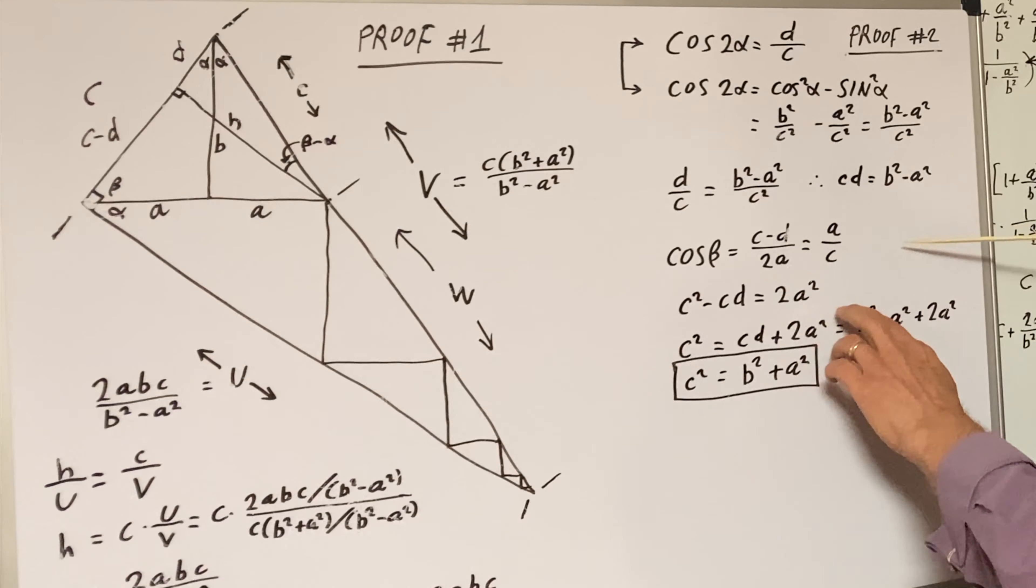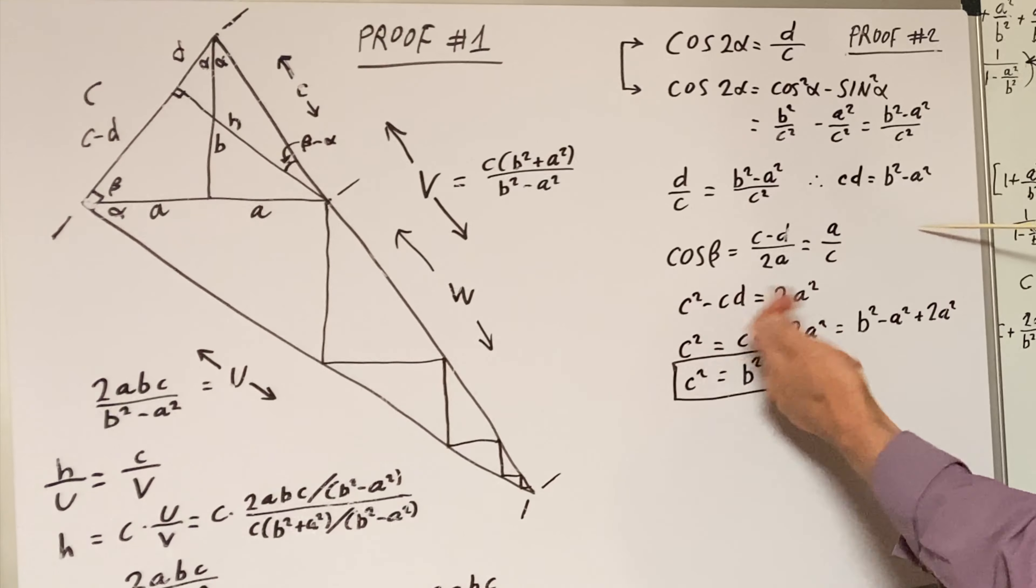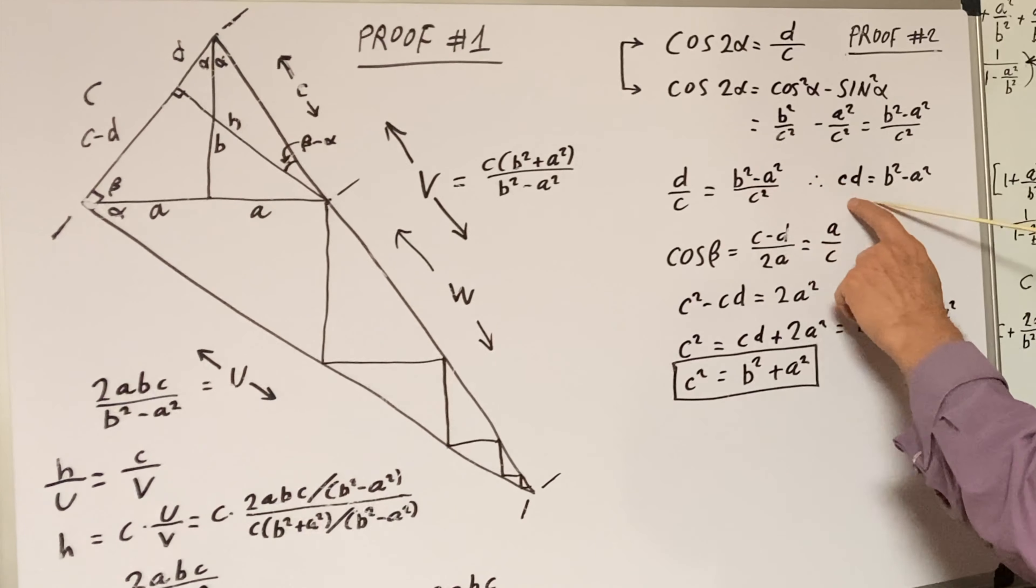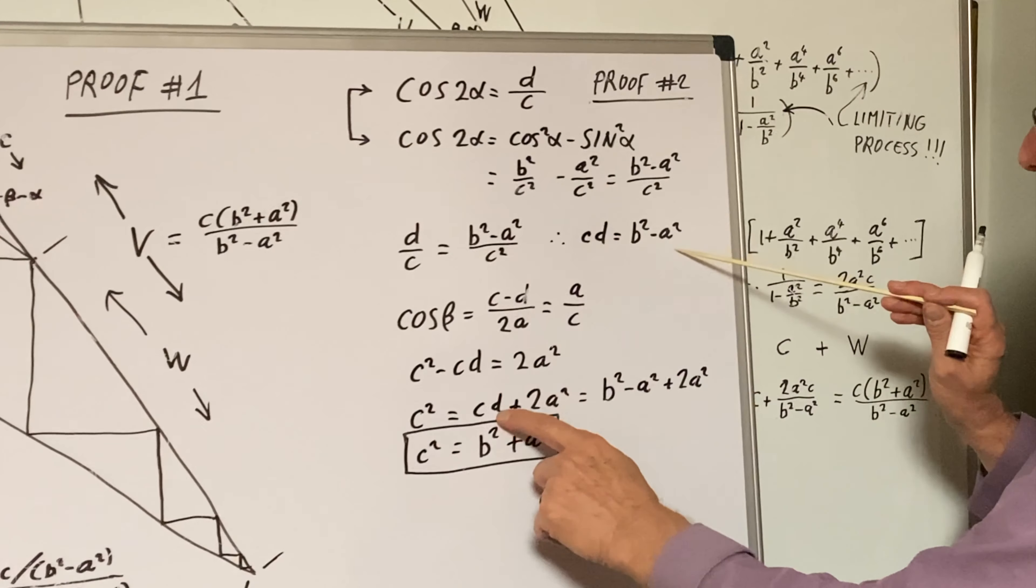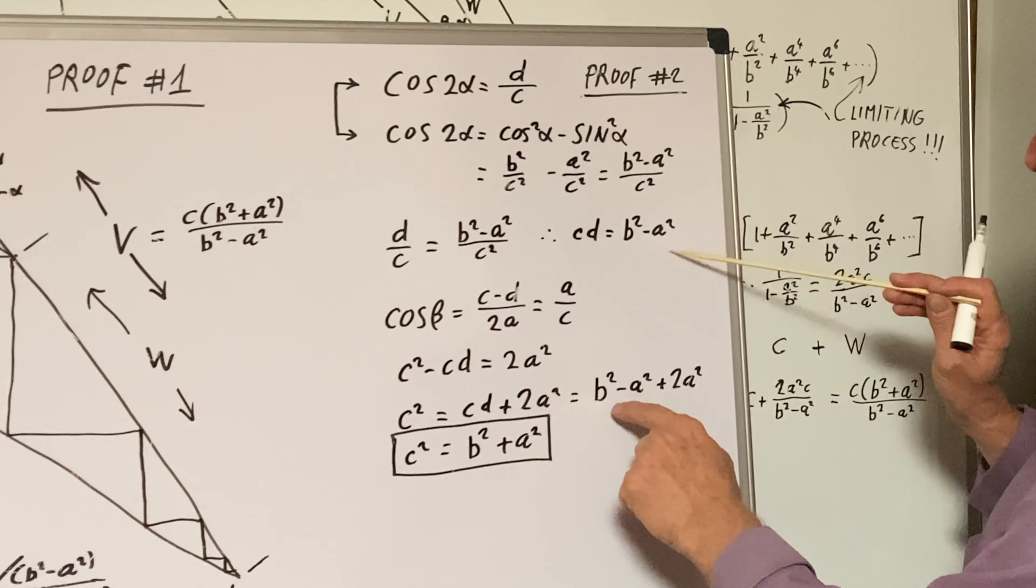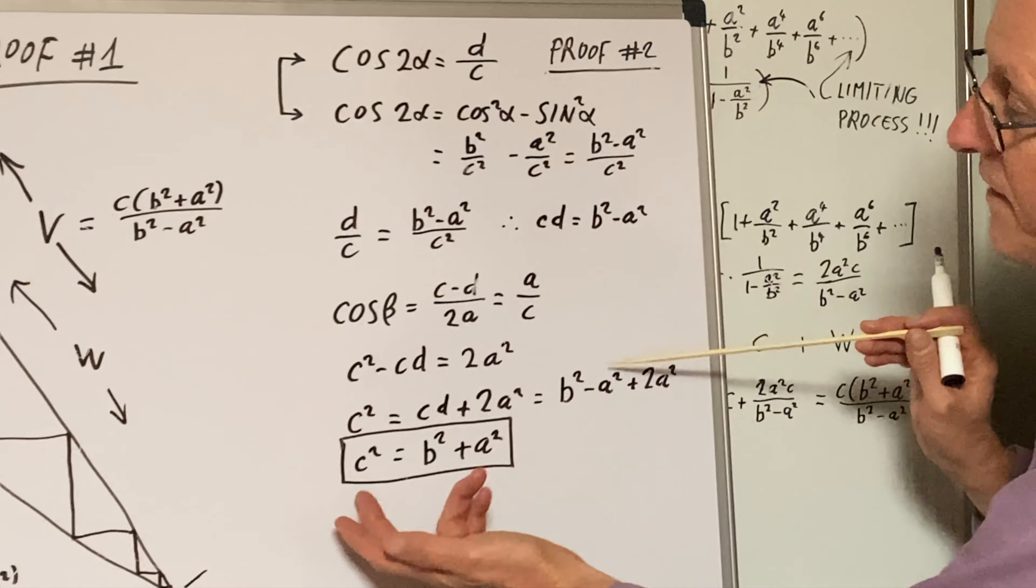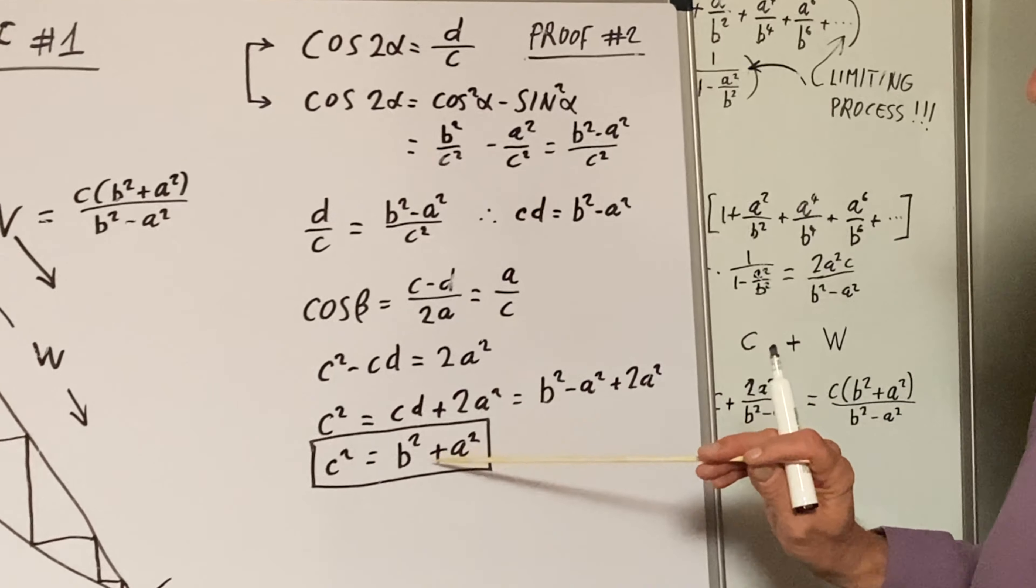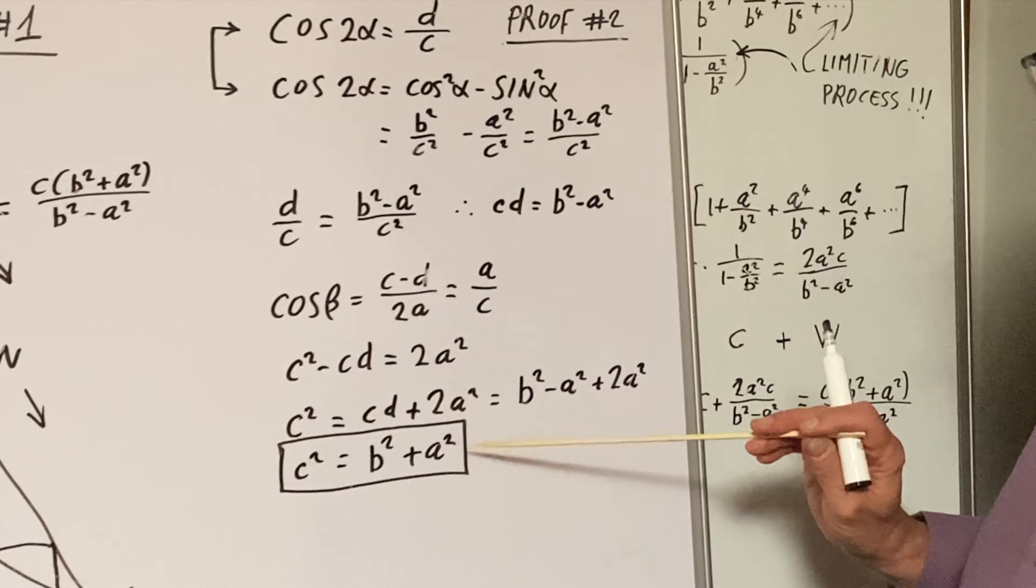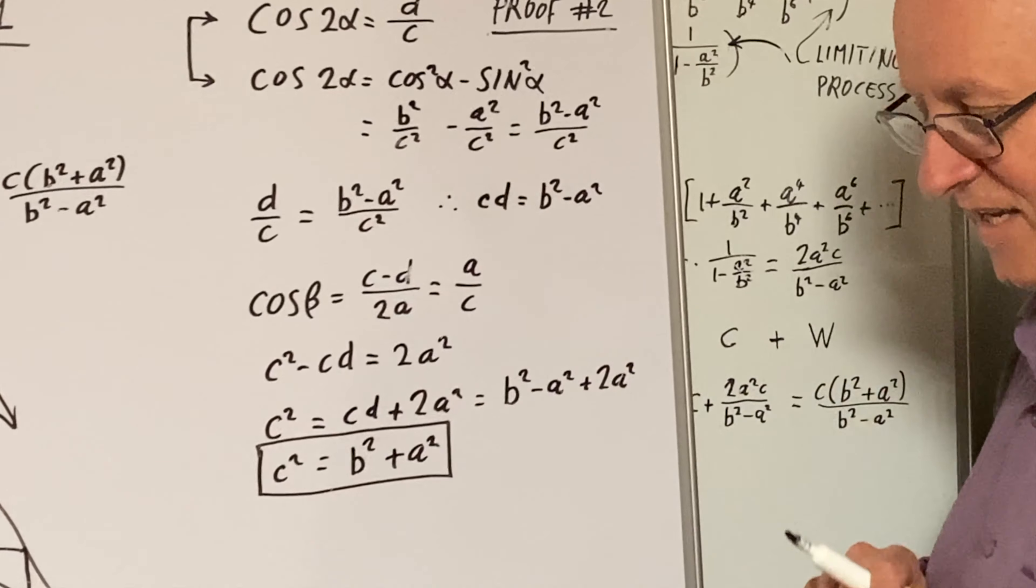Now let's throw the CD on this side. But look, we know that CD from previously calculating is B squared minus A squared. So you plug that in, you get B squared minus A squared plus 2A squared, which leaves C squared equals B squared plus A squared. That's what we're trying to prove.